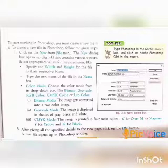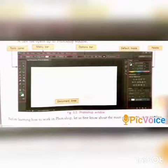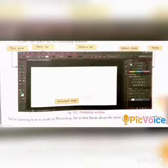In CMYK mode, images are printed in four main colors: C for Cyan, M for Magenta, Y for Yellow, and K for Black. After giving all the details to the new page, click on the OK button.